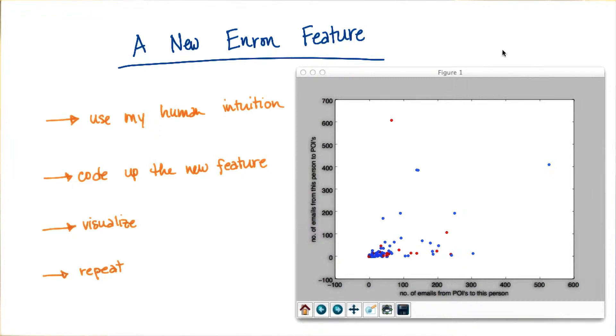Here's a visualization of the new feature. Along the x-axis here, I have the number of emails from a person of interest to a given person in the data set.